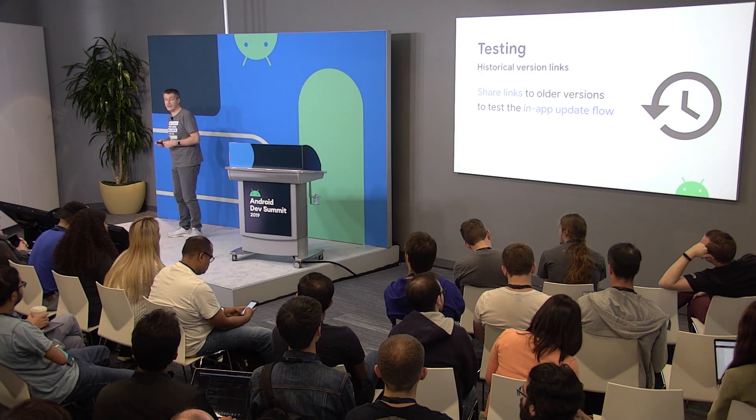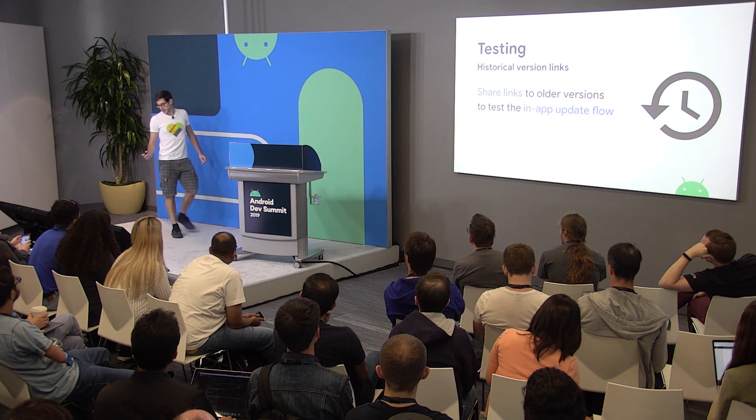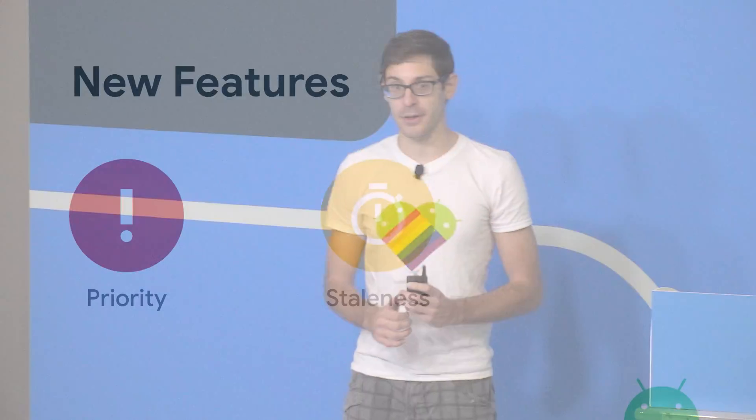Next is Alessandro, who is going to talk about some new exciting features coming to in-app updates. So I'm going to tell you about a few new features we've been working on after Google I/O, based on your top asks. We're going to introduce a couple of new signals that will help you decide when to trigger an in-app update, which flow to trigger, and how much to promote it in your UI. These are the update priority and the app staleness.